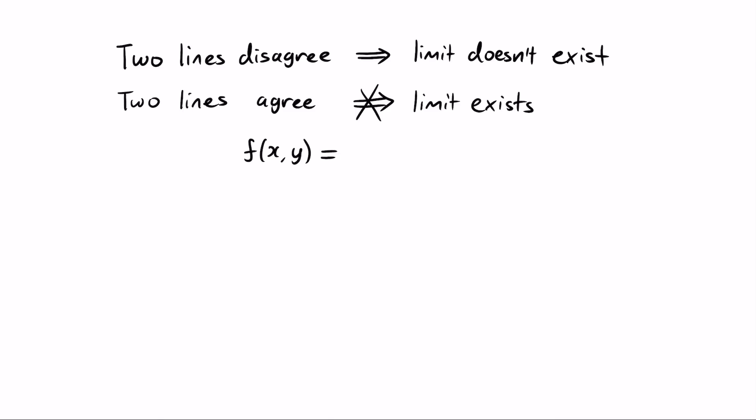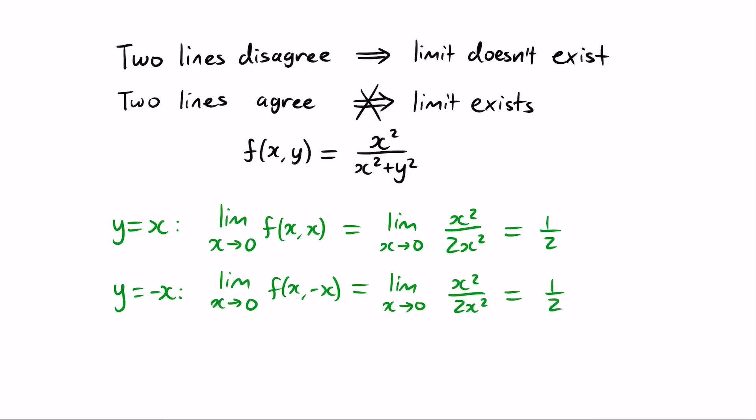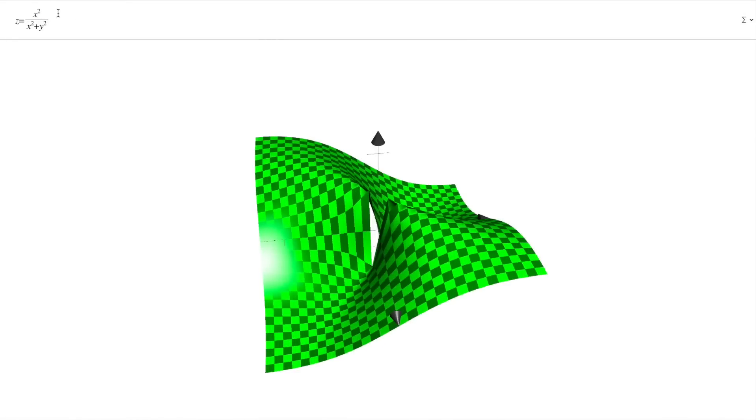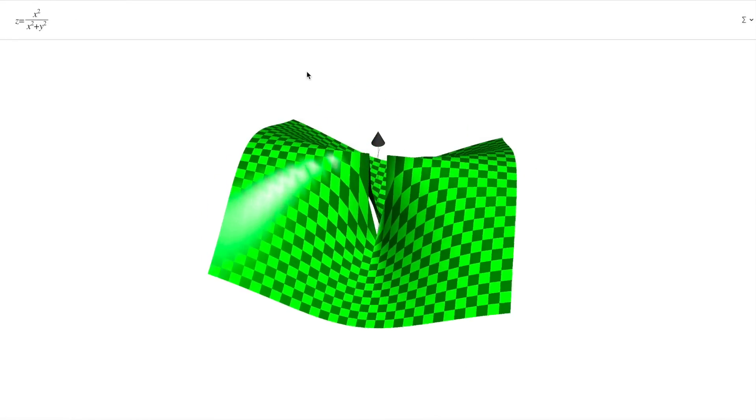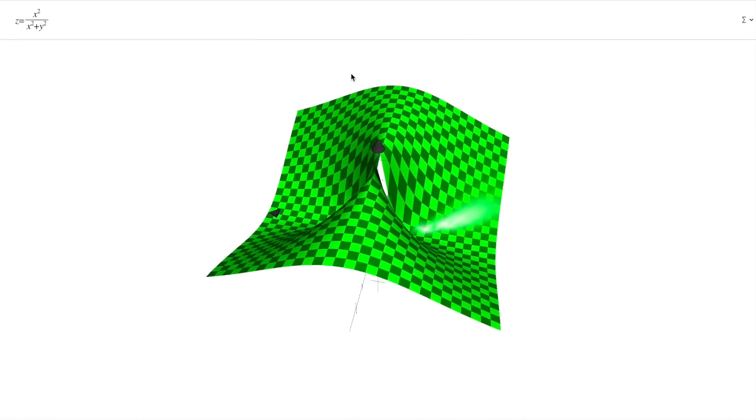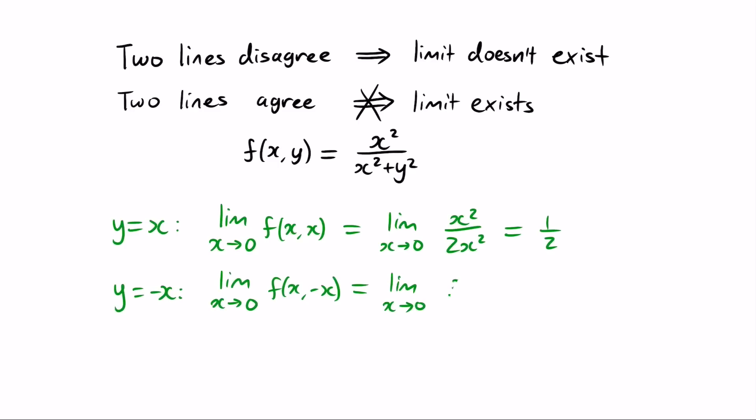To start off, here's a very simple counter example. Take the function x squared over x squared plus y squared, and let's test the same two paths that we tested on the previous function. With y equals x, we get a half, and with y equals minus x, we again get a half. Does this prove that the limit exists? No, and you can clearly see from the graph that the limit doesn't exist. If we picked another path, such as y equals 0, we get a different result. The limit instead approaches 1.